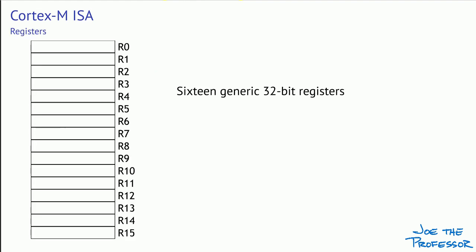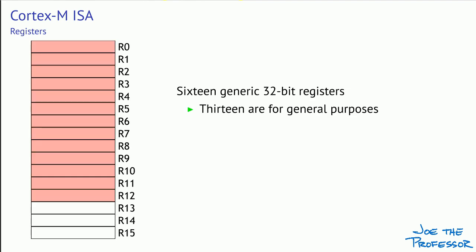Let's start by looking at the registers in the Cortex-M ISA. This architecture has 16 generic registers, meaning that in general any of these registers can be used as an operand of an assembly language instruction. However, there are really 13 intended for general purpose use — registers 0 through 12. They can hold data or an address, and it's important to remember that the registers don't know whether their contents are data or an address; it's up to you as the programmer to keep track of that.